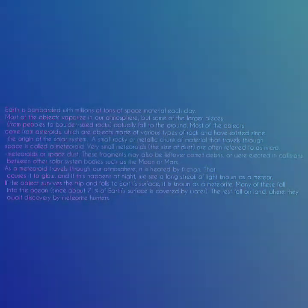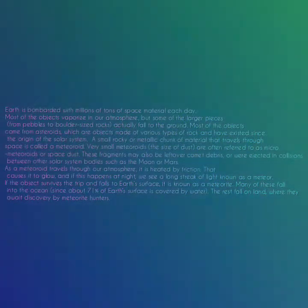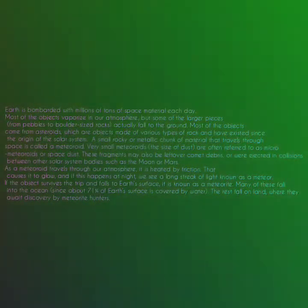A small rocky or metallic chunk of material that travels through space is called a meteoroid. Very small meteoroids are often referred to as micro-meteoroids or space dust. These fragments may also be leftover comet debris, or were ejected in collisions between other solar system bodies such as the Moon or Mars.